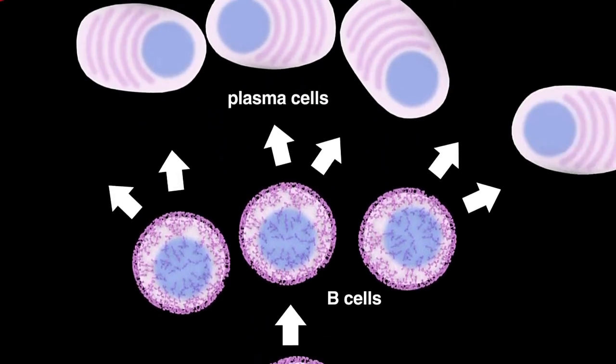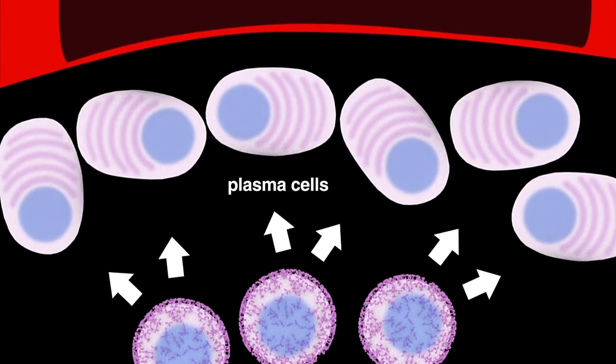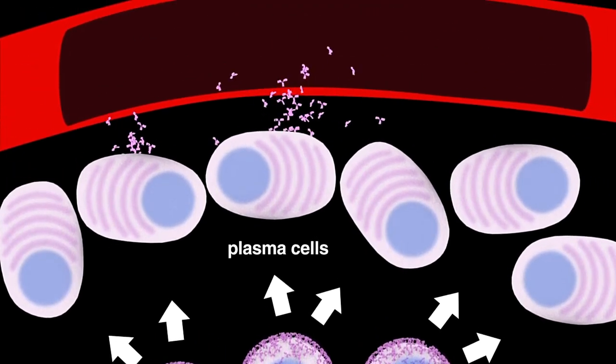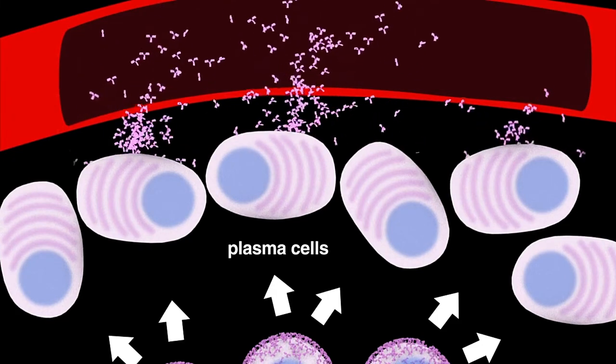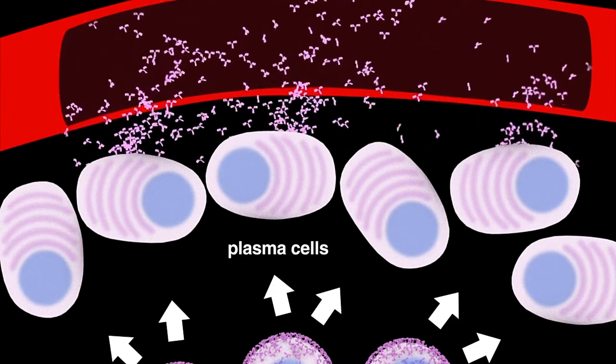Differentiated B cells or plasma cells in turn produce and secrete large amounts of their respective antibody which is released into the bloodstream to aid in the finding and targeting of additional pathogens of the same type.